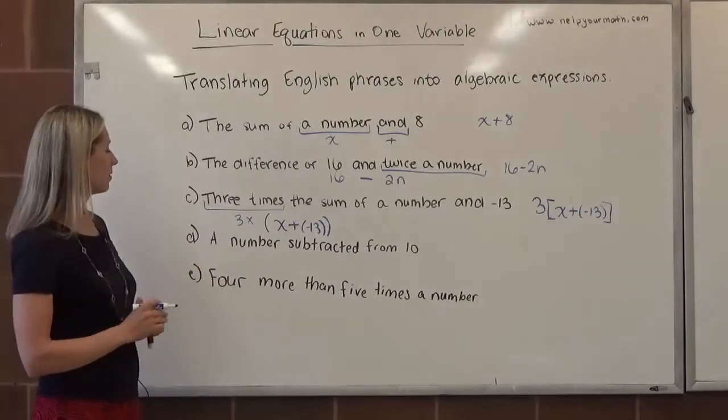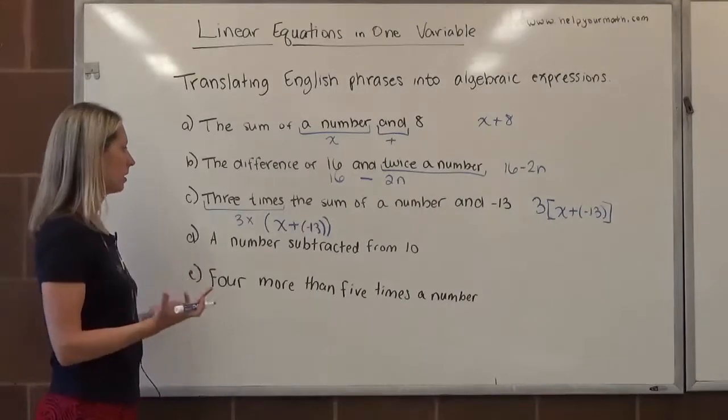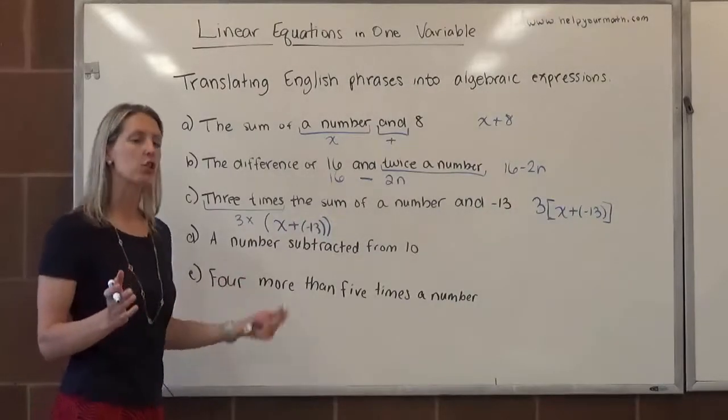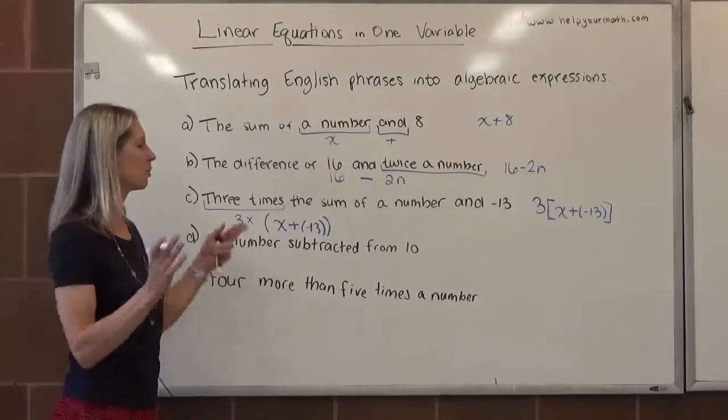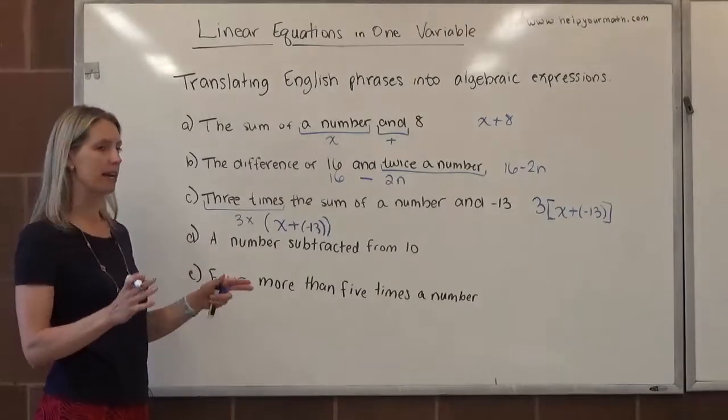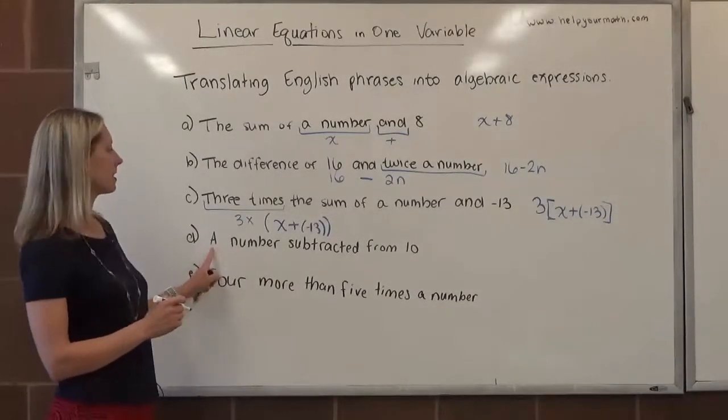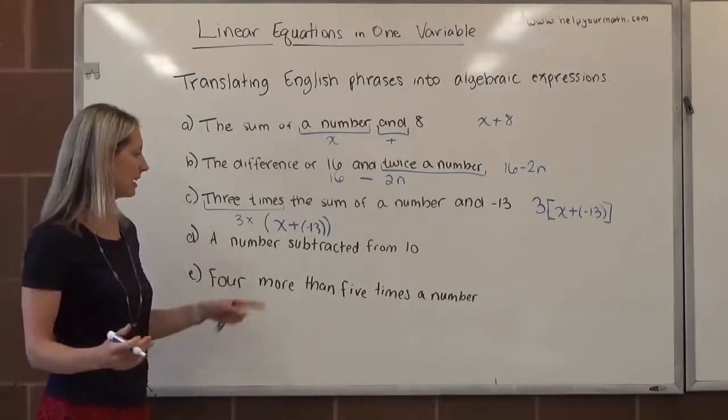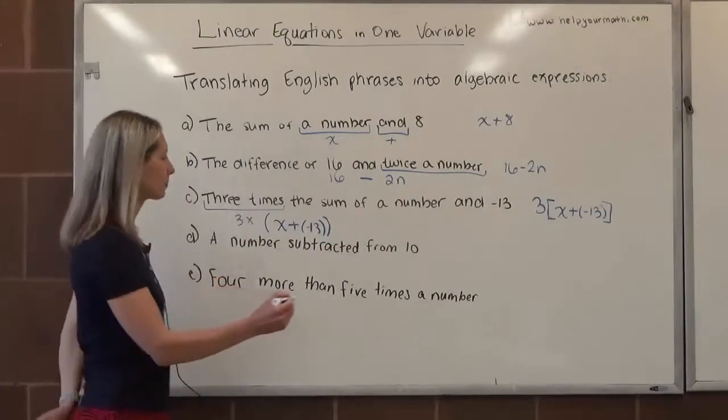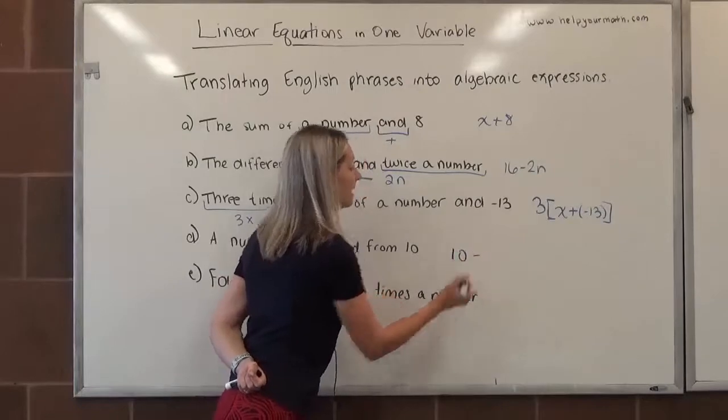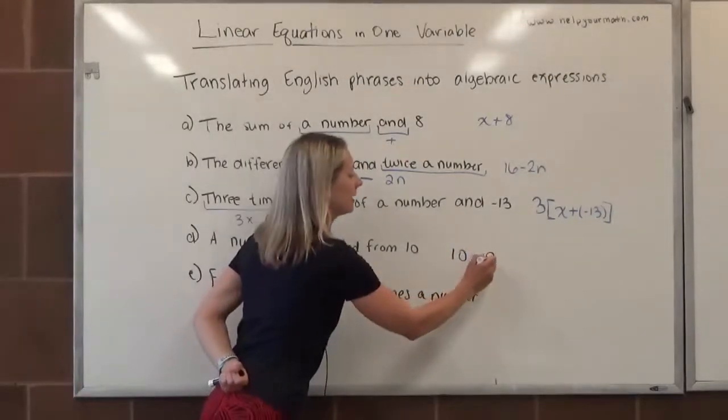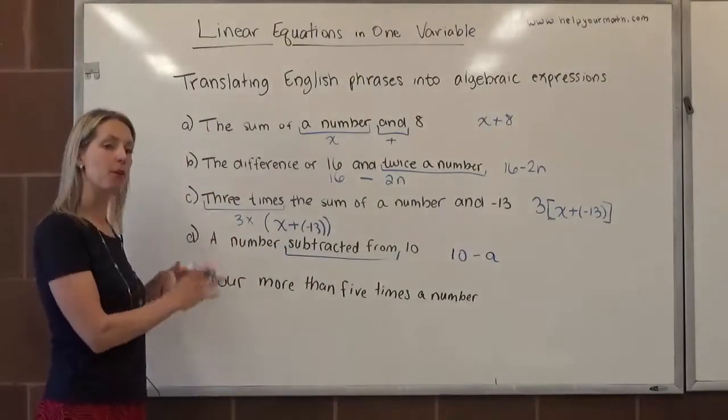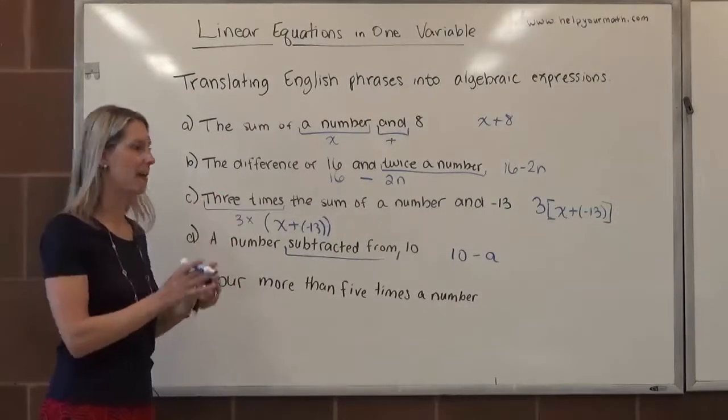Next up, we have letter D, a number subtracted from 10. For this one, we do need to be really careful. Remember, for subtraction, order matters. Five minus two does not give us the same result as two minus five. So the way that subtraction and division questions are phrased can be sneaky, and we need to be careful. This has a number subtracted from. That means that we are taking a number away from something else. What are we taking a number away from? We're taking it away from 10. So this would actually translate to 10 minus our unknown number, which maybe I'll call A here. So it would be 10 minus A. Anytime you see subtracted from, that indicates that the first piece is the thing that's being subtracted.